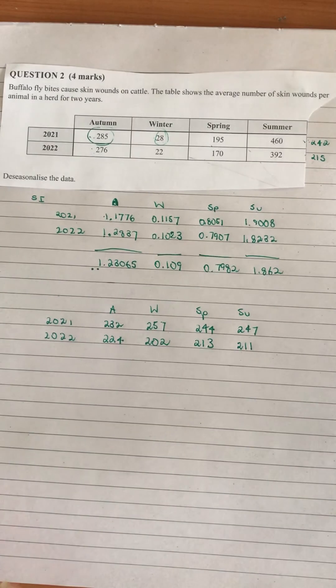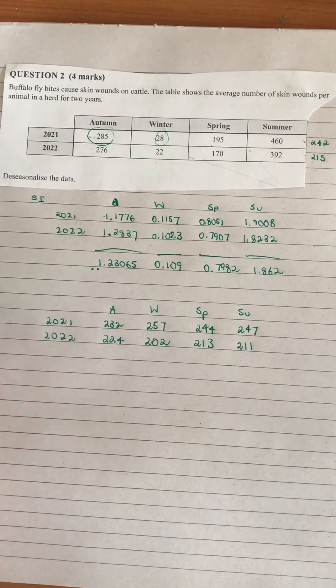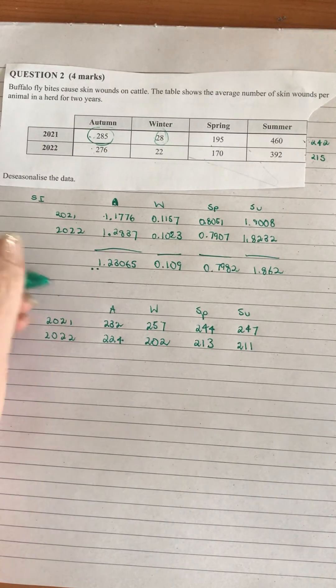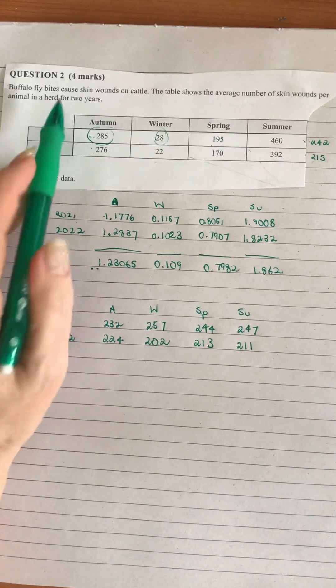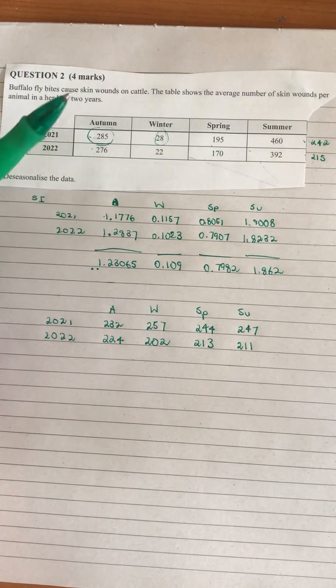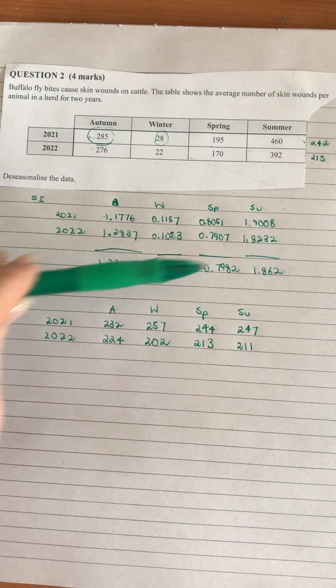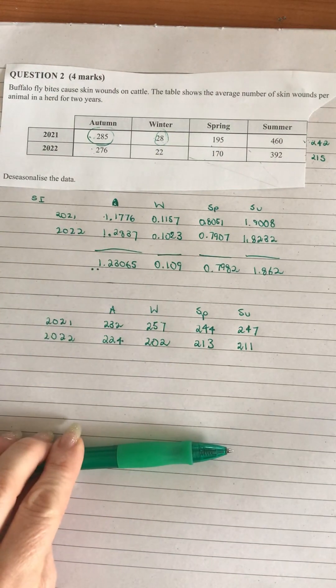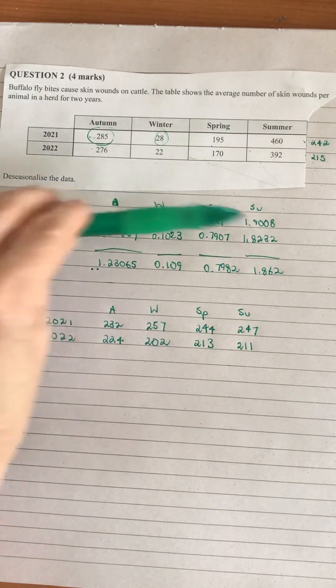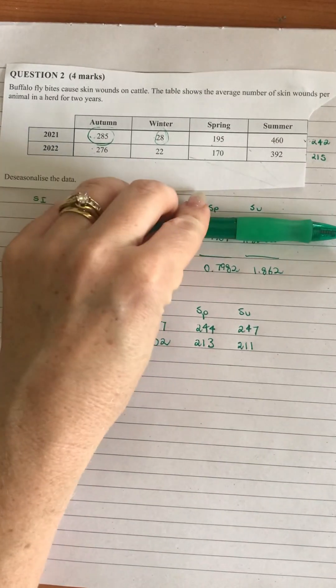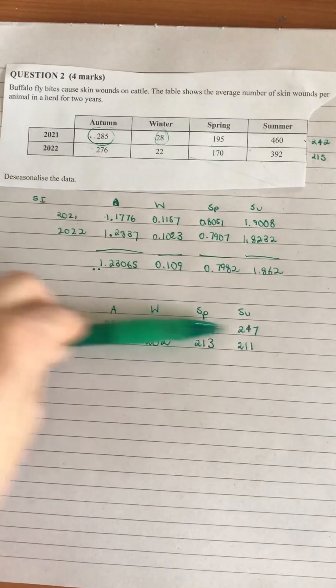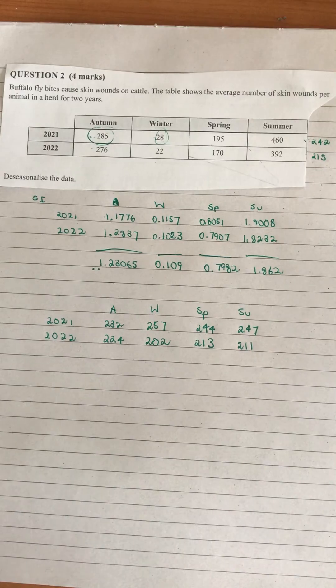You will need to make sure you put in some information about how you were doing those calculations, so maybe put a sample one that you worked out. It's worth four marks, so one mark is allocated for those averages per year, and then we've got the other marks allocated down. I think there was one for the index for each one, one for the averages, and one for the de-seasonalized data.